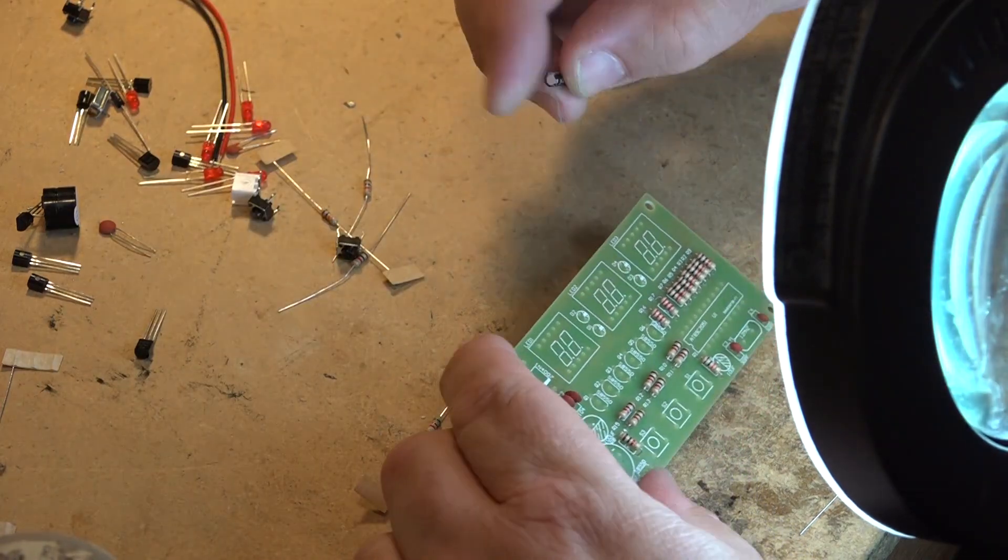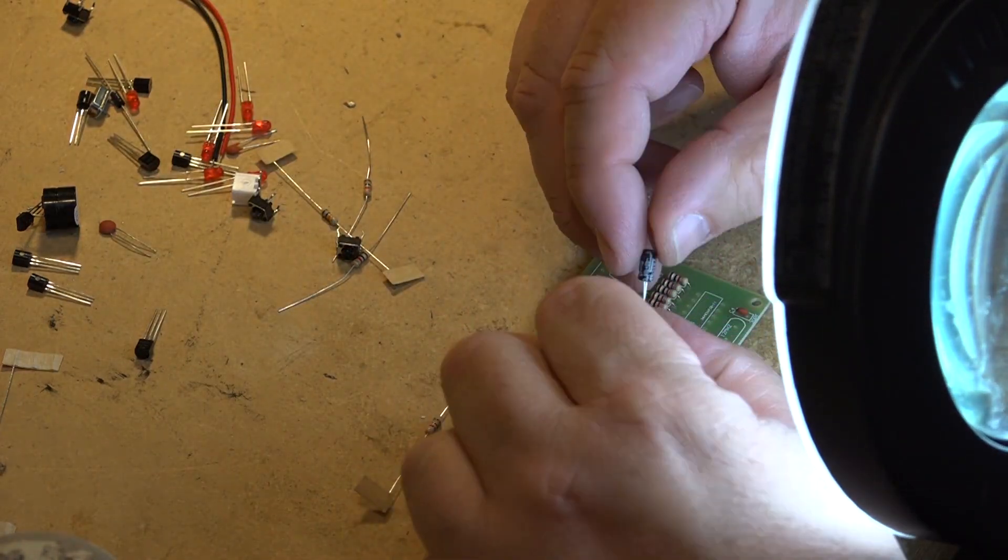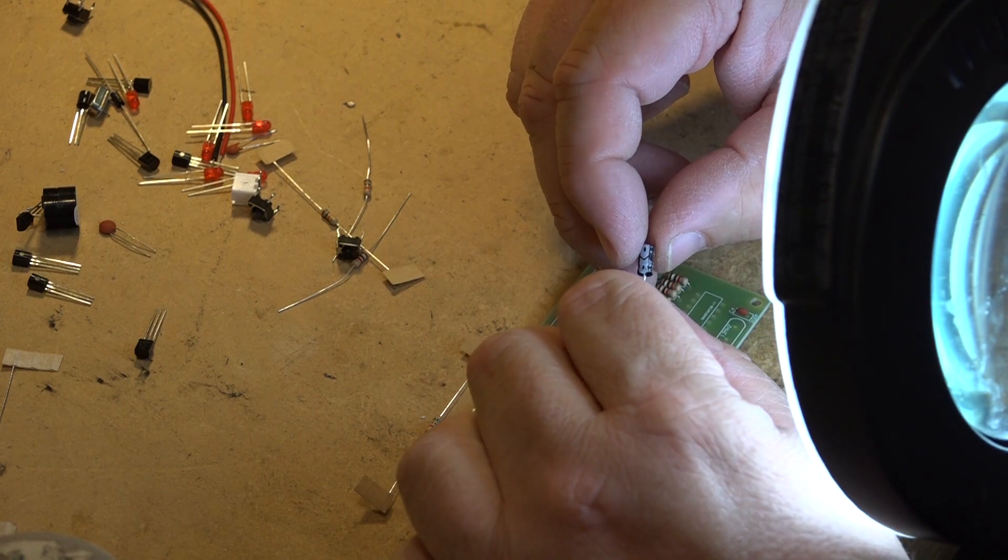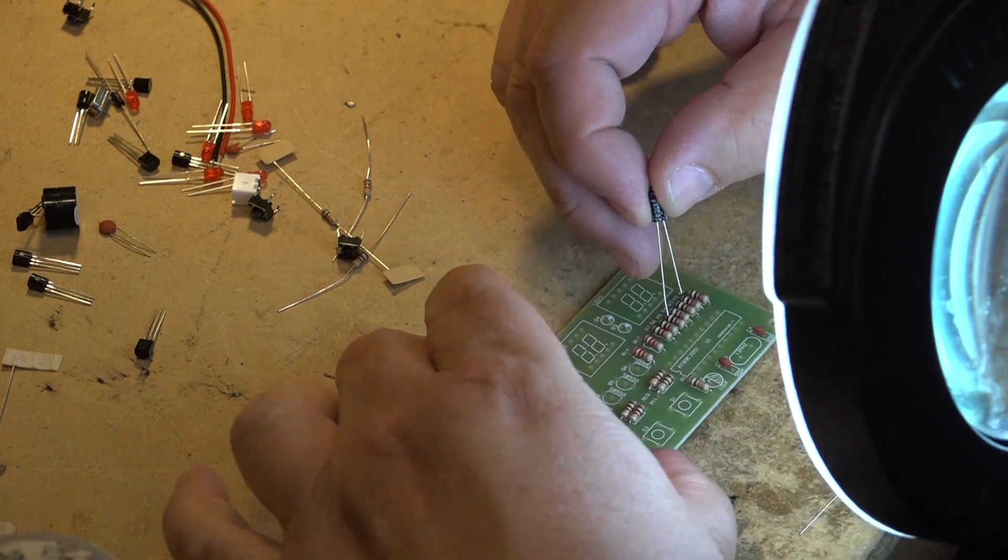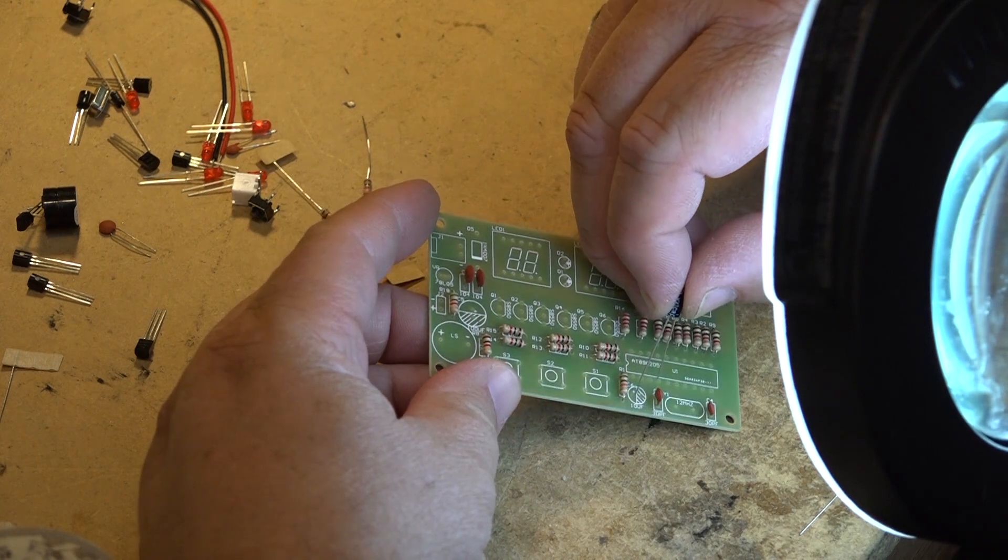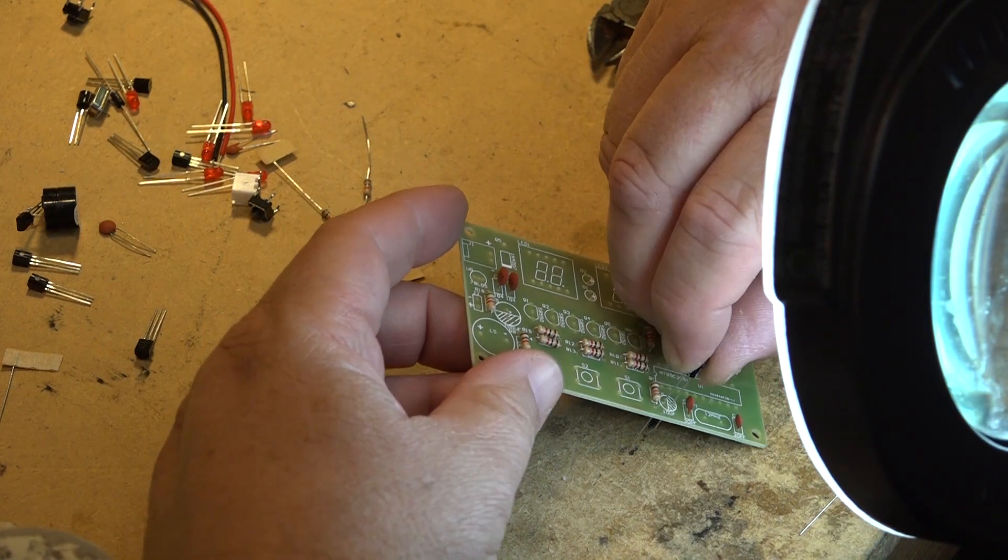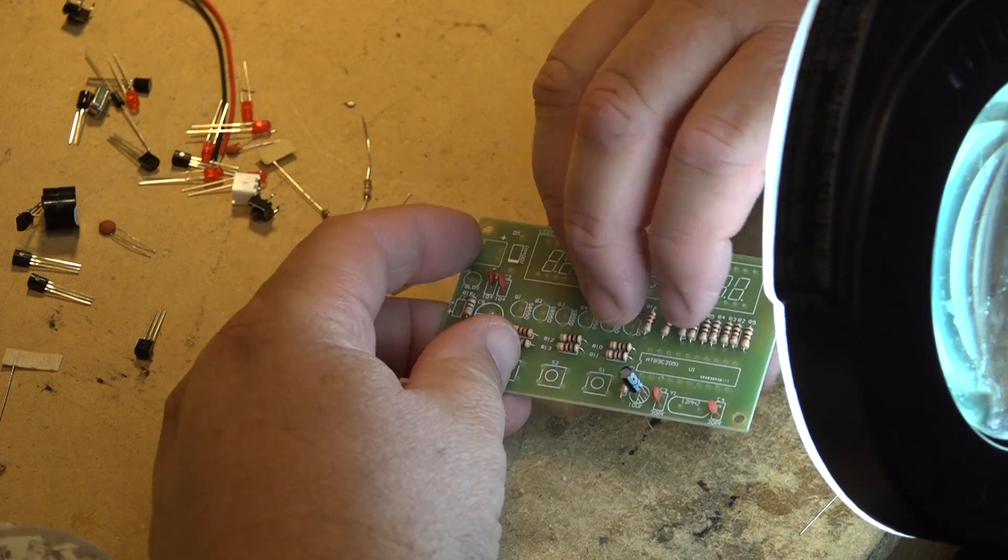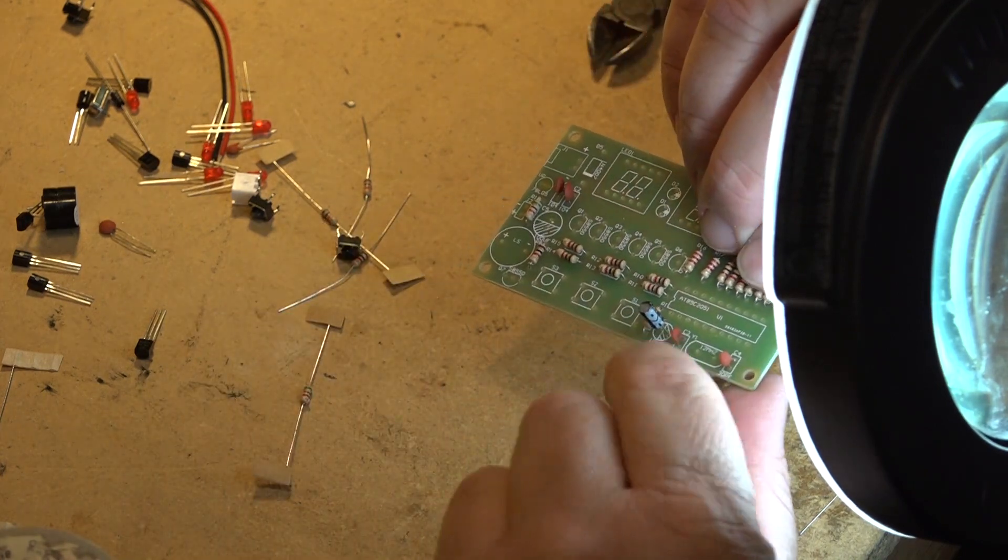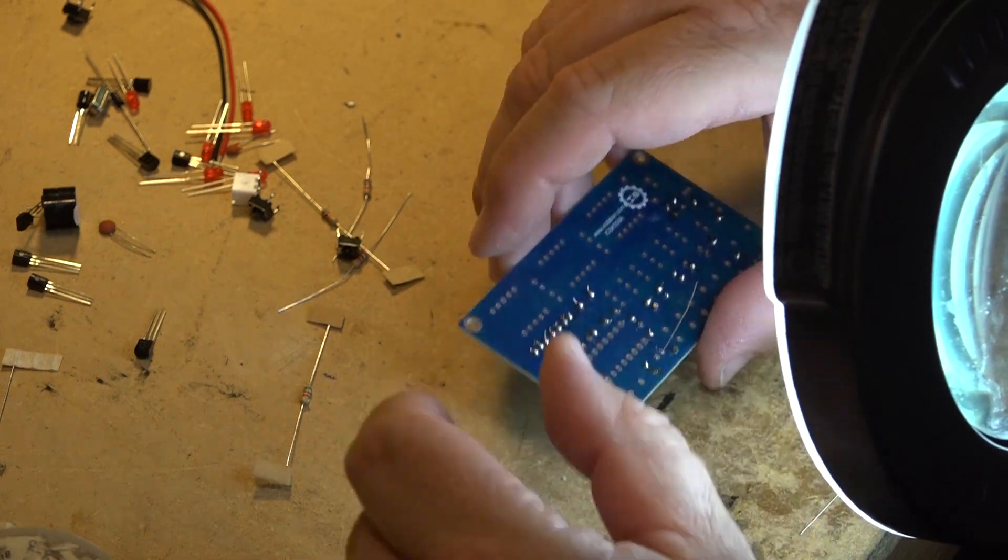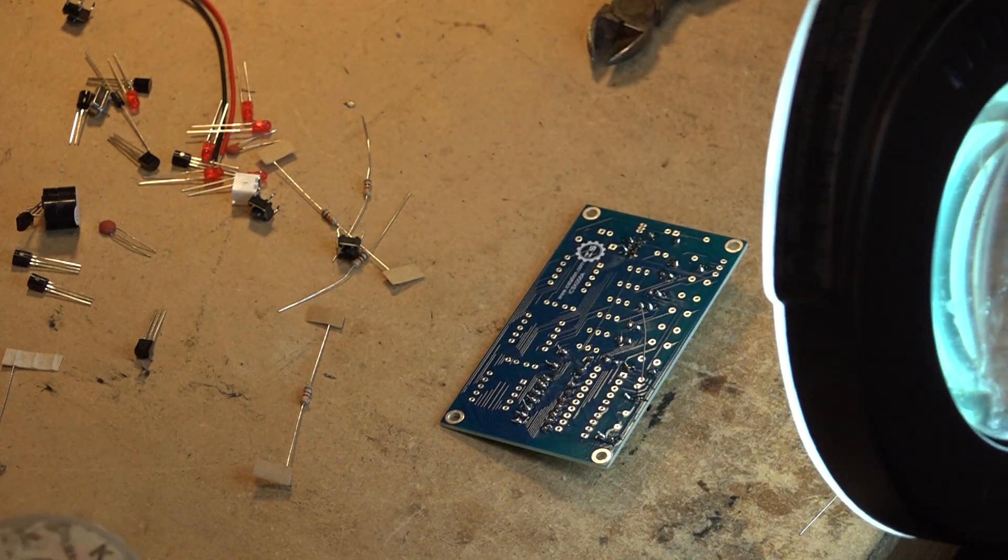Next is a 10 microfarad electrolytic. The electrolytic capacitor is polarized, so you have to make sure you get the polarity correct. They're marked with plus and minus, so the minus side goes to the minus side on the board. I'll solder that little cap in place.